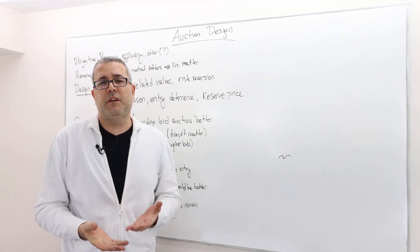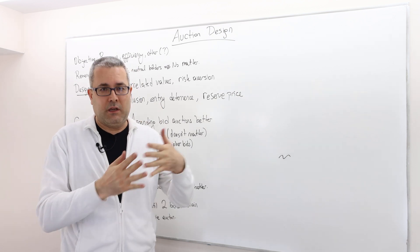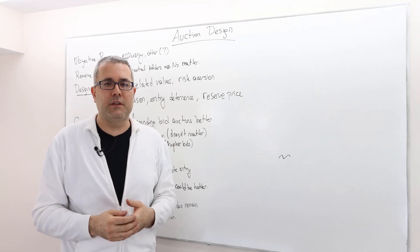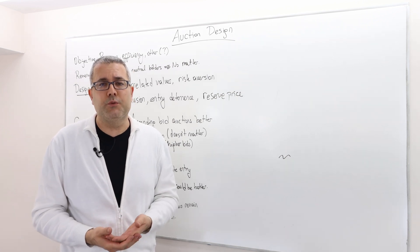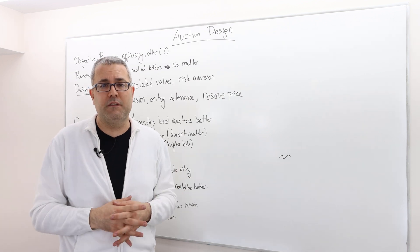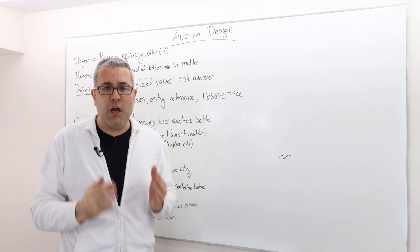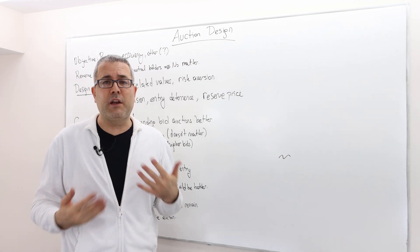Auction design is a very important question. There are a bunch of different auction mechanisms or auction rules. Which one should we use? What is the optimal, most profitable auction mechanism, whatever your objective function is? Can we design better auctions?